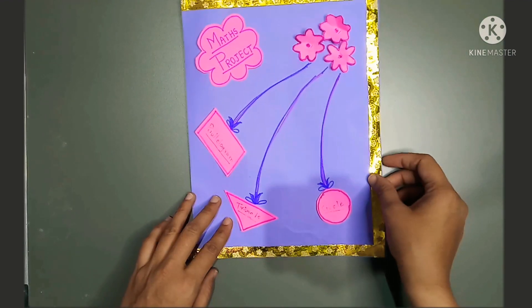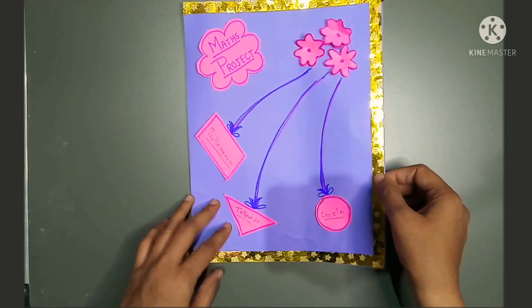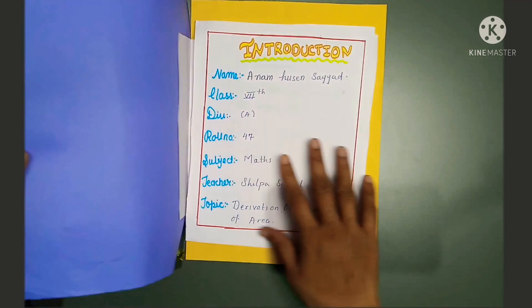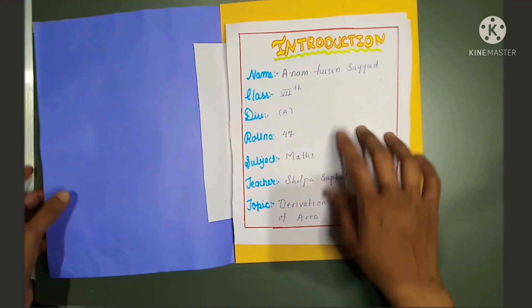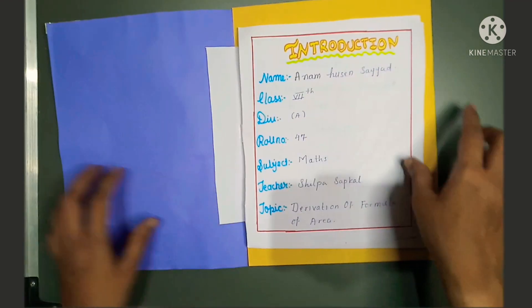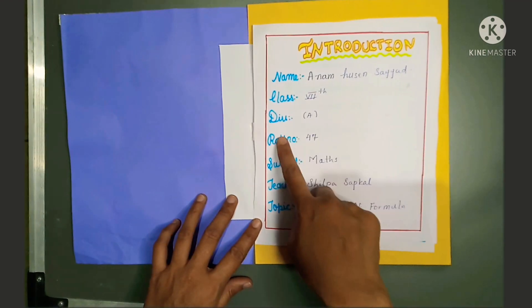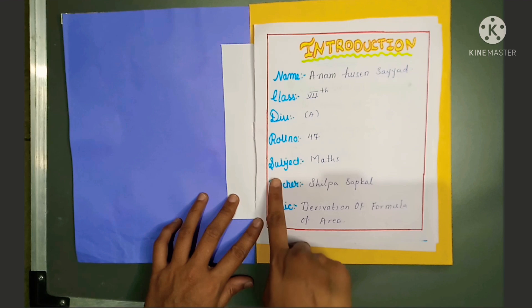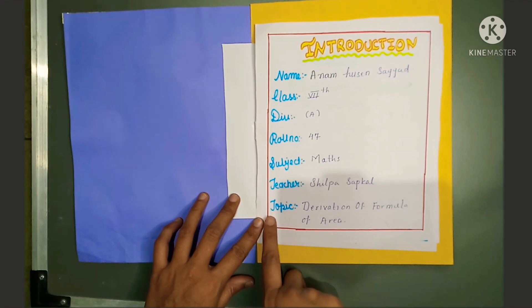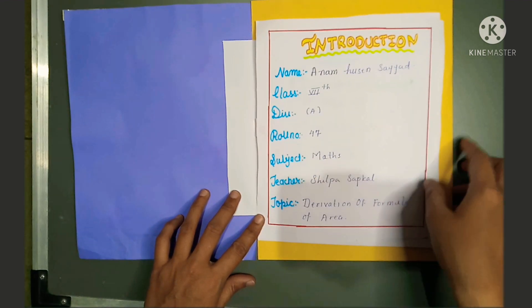Here is the Maths Project of Class 7. Here is the Introduction: Name, Class, Division, Rule Number, Subject, Teacher, Topic.